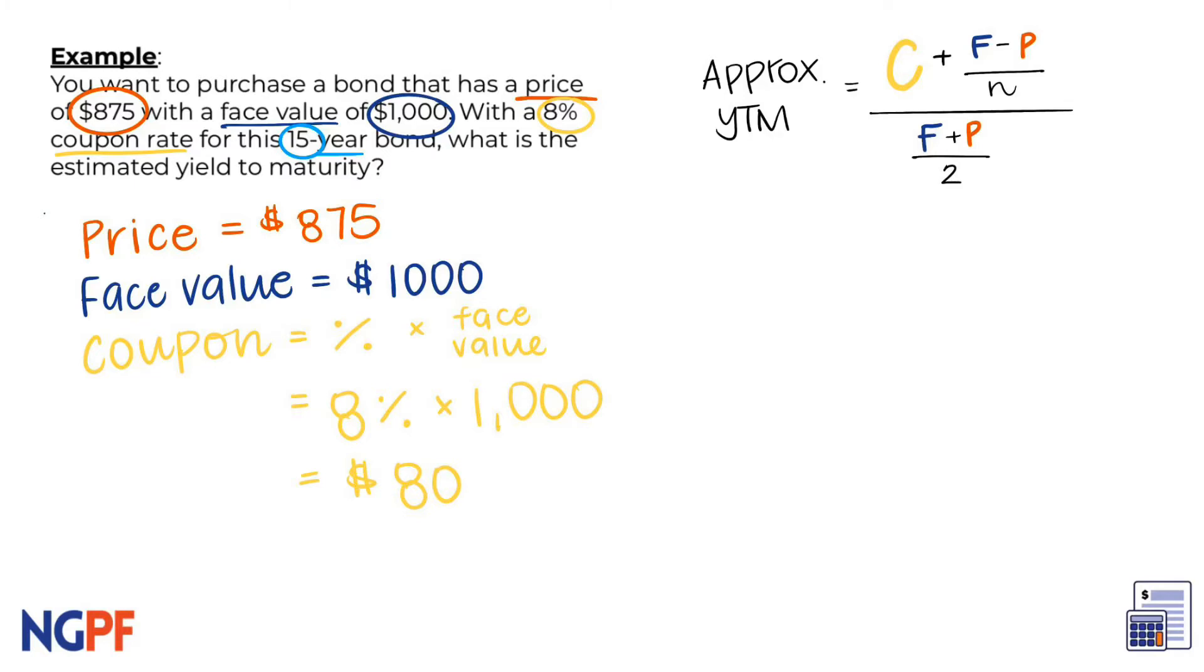Lastly, we know that the bond will reach maturity in 15 years. Now that we have accurately identified our variables, we can substitute them into the formula. We can take our coupon rate of 80 and add this fraction, where we will take the face value of 1,000 and subtract the price of 875.